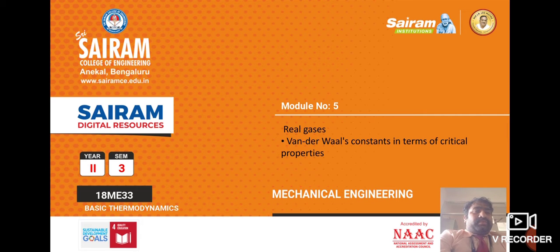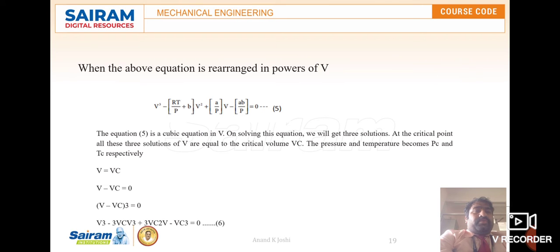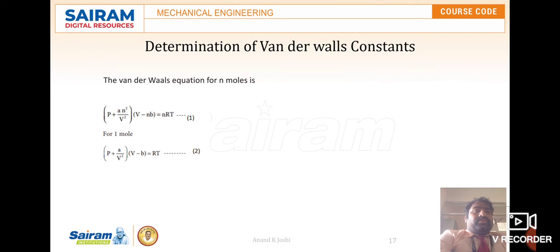So let us discuss. From the Van der Waals equation, the basic equation is: (P + an²/V²)(V − nb) = nRT. That is equation number 1, where n is the number of moles. For one mole of substance, the equation becomes (P + a/V²)(V − b) = RT. This is equation number 2.